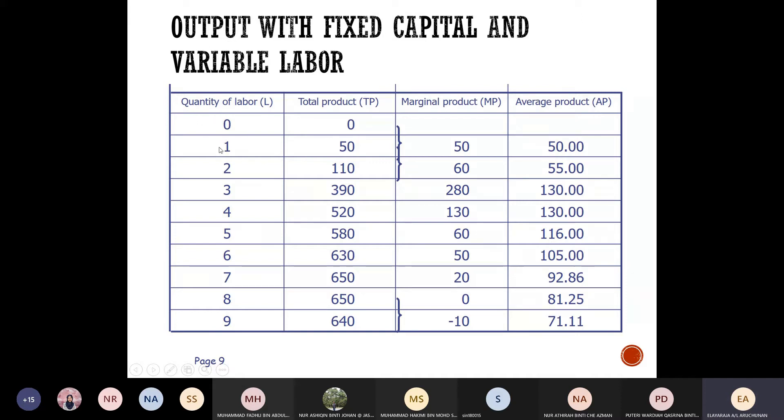Now say you have one labor, and the total product is 50. So if you look at that, the marginal product... the marginal product, usually, as I said, the total product divided by the quantity of labor, correct or not? Correct, isn't it?